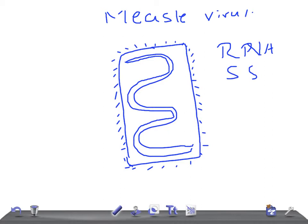It's negative, enveloped, and helical. These are the important things about the measles virus.